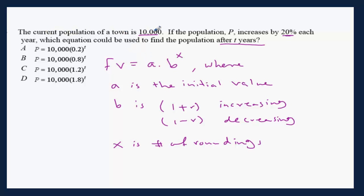Current population of a town is 10,000. That's the initial value. Therefore, the future value equals 10,000 times b.